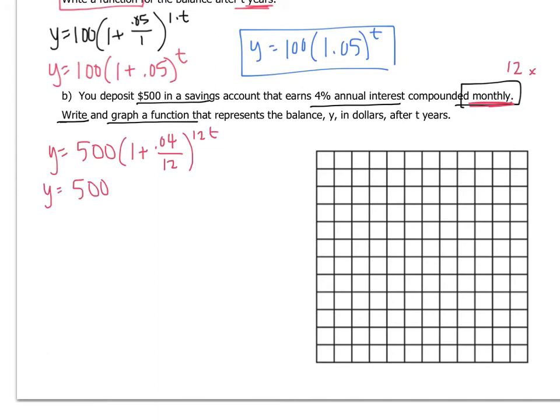All right, Y equals 500 times 1 plus. I've got to get my calculator out. 0.04 divided by 12 is 0.0. I'll just round that 0.003, 12T. So let me just do one more simplification. 500 times 1.003 to the 12T. All right, so now I'm just going to plug in a couple values for T and see what I get for Y. I'll do zero, one, two, and three, and four. Hey, why not? Because I have a little room.